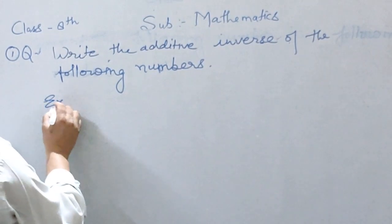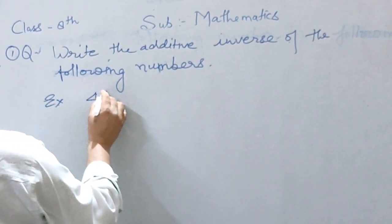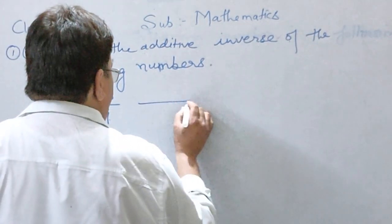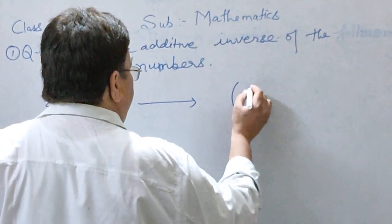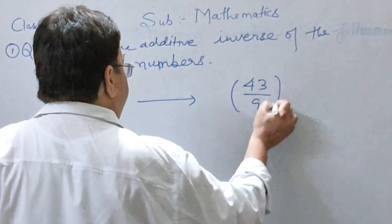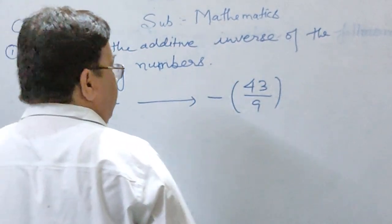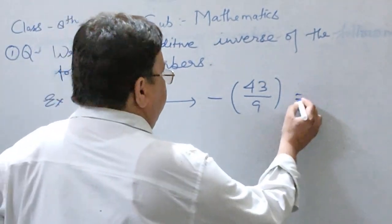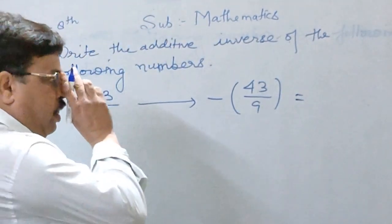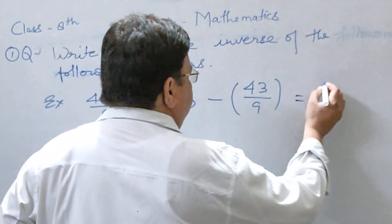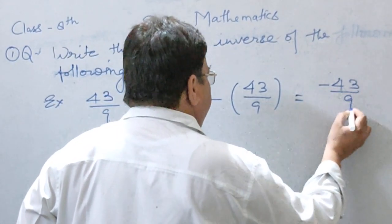Example number first, 43 by 9. Now write the number in the bracket and then put minus before the number. Now open the bracket, minus 43 by 9.